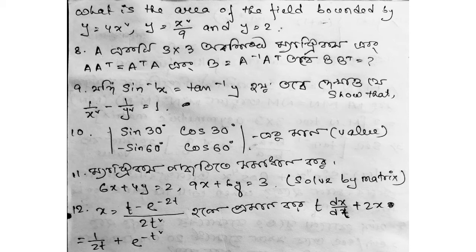Also, y equals 2. If a is a 3×3 matrix and b equals aᵀ times a, and b is equal to a⁻¹ aᵀ, then what is b bᵀ equal to? The function and Bengali and English versions are almost the same, so we will treat them as the same.